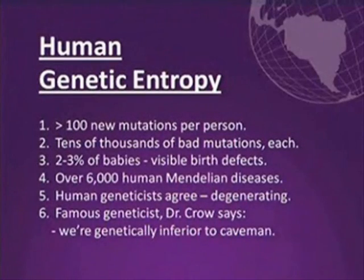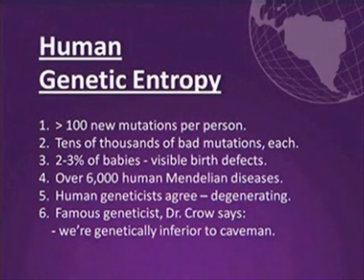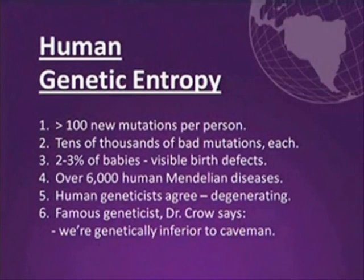Let's talk more specifically about human genetic entropy. Several decades ago, a very famous geneticist said that if the mutation rate was as high as one mutation per person per generation, human extinction would be certain, and human degeneration would be certain. Well, now we have actually measured the human mutation rate. It's over 100 mutations per person per generation. That means each of you have 100 more mutations than your parents had, and each generation adds another 100 mutations. That's the lowest estimate.